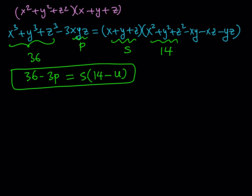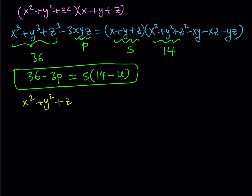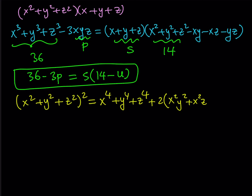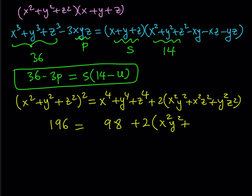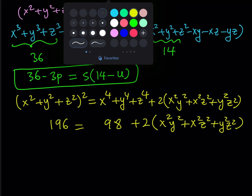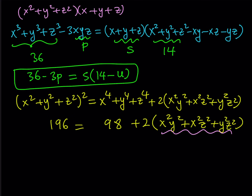I haven't used the fourth powers yet, so let's take the sum of squares and square it to get the fourth powers. When you square it, you get the sum of the fourth powers, plus two times x squared y squared, x squared z squared, and y squared z squared. We know the sum of squares is 14, so that squared is 196. We know the sum of the fourth powers is 98. So we can find the value: x squared y squared plus x squared z squared plus y squared z squared equals (196 minus 98) divided by 2, which is 49.